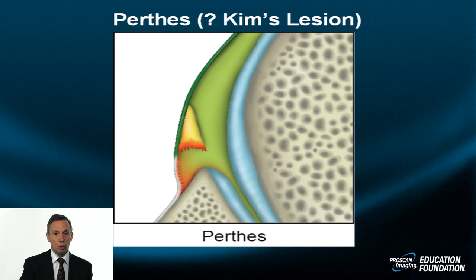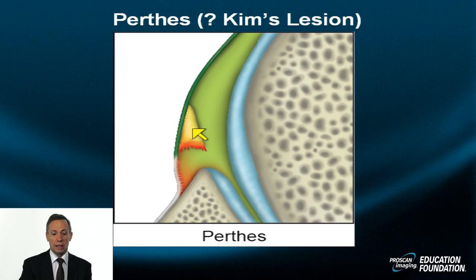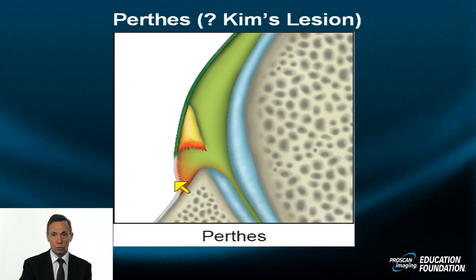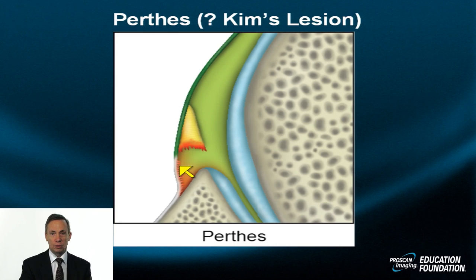The Perthes lesion is virtually identical to the soft Bankart with one exception: periosteal integrity is maintained. Even though the labrum is separated from the bone, often by a small amount, a little pouch forms in which hematoma and synovial fluid may accumulate, producing a small pseudo-cystic appearing lesion or wide cleft. The periosteum is preserved.